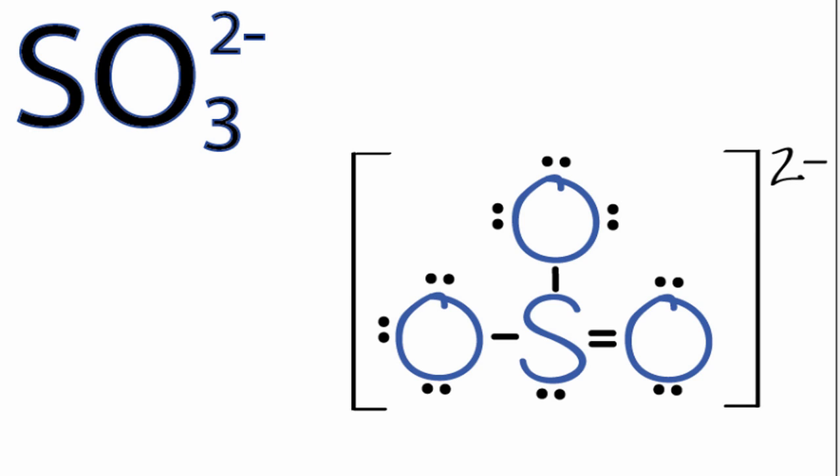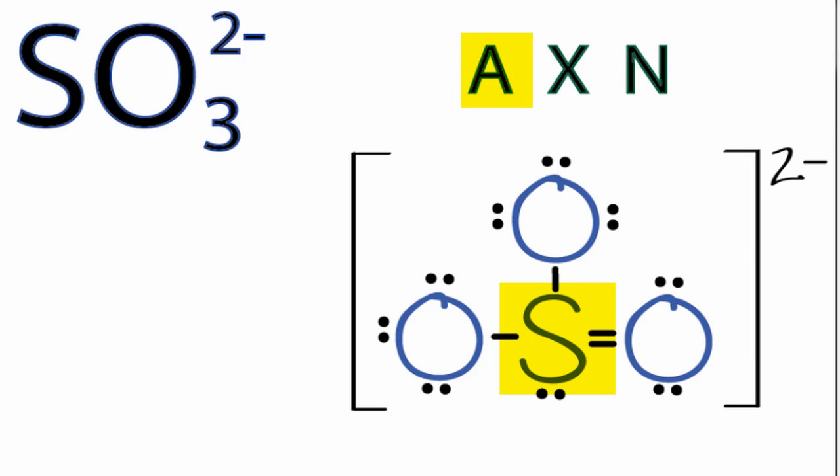We can also use the AXN notation to figure out the molecular geometry. A, that's that sulfur in the center there. X, that's the number of atoms bonded. There are three oxygens, so we'll put a 3 right there. And then N, that's the number of non-bonding electron pairs, and we have a pair right here, so we'll put a 1 for the N.